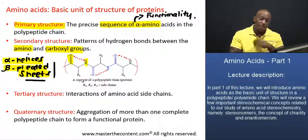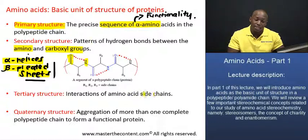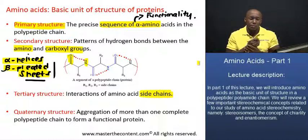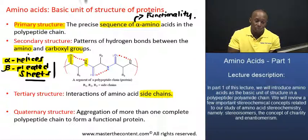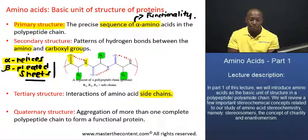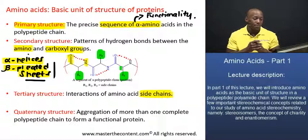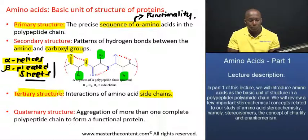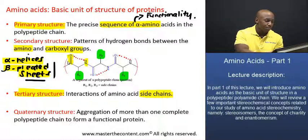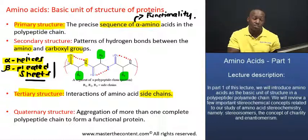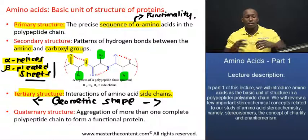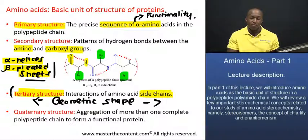At the tertiary level of organization, interactions of amino acid side chains will actually produce unique conformational changes in the structure of the protein as a whole. We're talking about those side groups that can be largely different. Those side groups in the amino acid chain can interact and, by means of various forces of attraction, determine what we refer to as the tertiary level of structure in a protein. The tertiary level of organization actually determines the geometry of a protein — it is responsible for the 3D conformation, or the shape, of the protein.